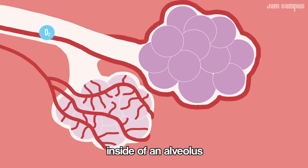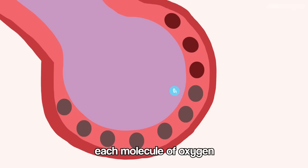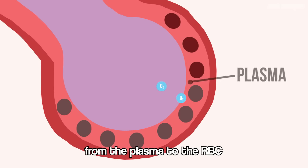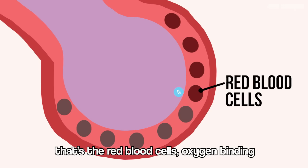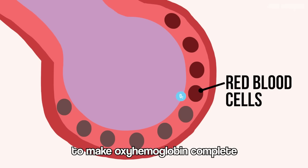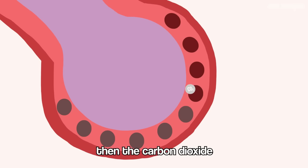Inside of an alveolus, the exchanging of gases happens. Each molecule of oxygen diffuses into a capillary and enters the blood from the plasma to the RBC — that's the red blood cells — oxygen binding with the heme part of the hemoglobin protein to make oxyhemoglobin complete.